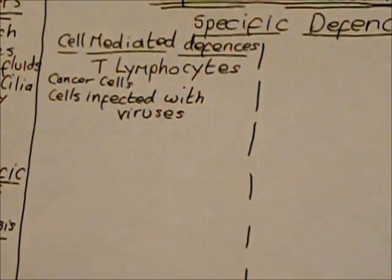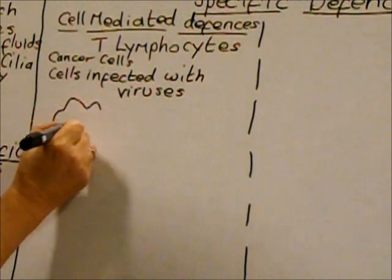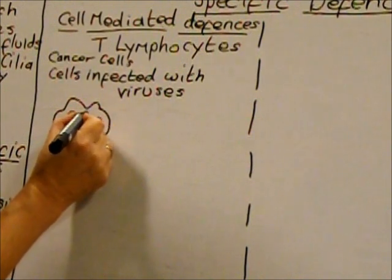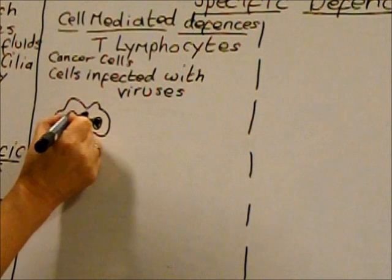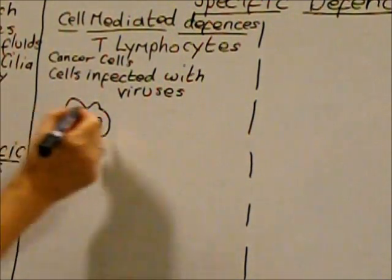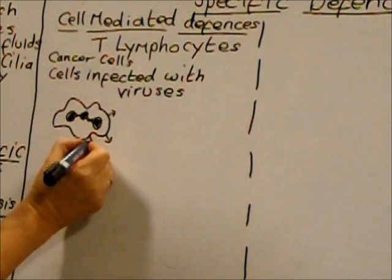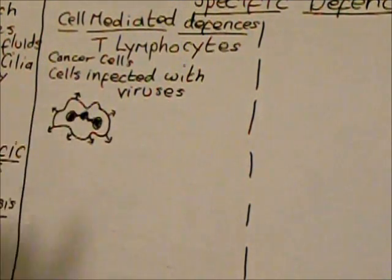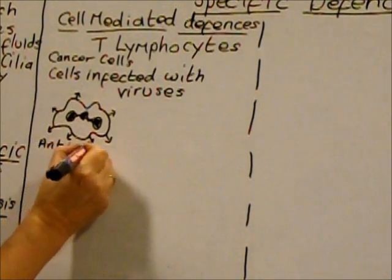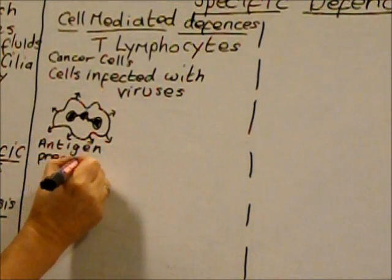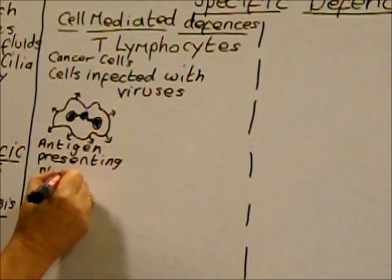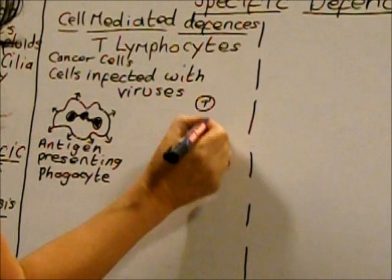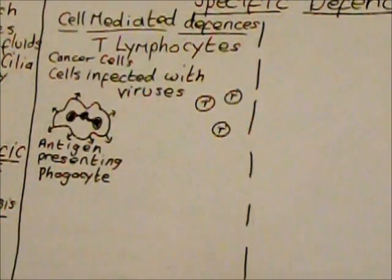The phagocyte then becomes what's known as an antigen-presenting cell, and it presents those antigens to your immune system to warn it that the pathogen is in the body. Phagocytes are quite unusual-looking because they're irregular in shape and tend to have a nucleus with three lobes. The antigens from the pathogen are inserted into the phagocyte's cell surface membrane — it's now an antigen-presenting phagocyte.